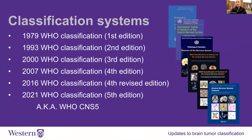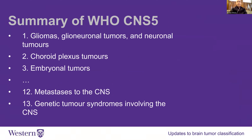I'll refer to the latest edition, WHO CNS-5. In WHO CNS-5, there are a few big categories. The first is called gliomas, glioneuronal tumors, and neuronal tumors, which captures a large majority of tumors within the brain but not all of them. The most common brain tumors are actually meningiomas, pituitary tumors, followed by glial tumors. Determining which tumor is most common is tricky because not all tumors undergo surgery, and if they're only found on a brain scan, we don't have proper records of the pathology.